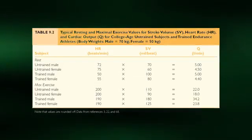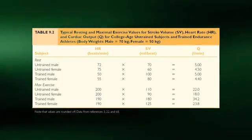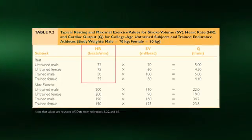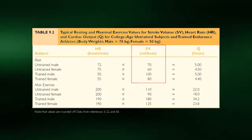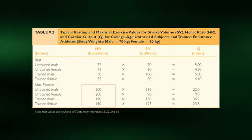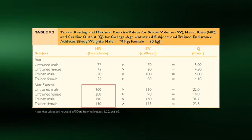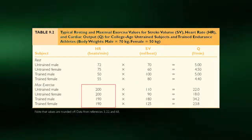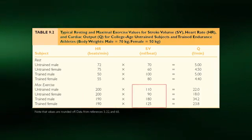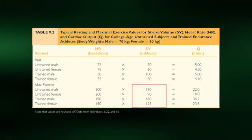Shown here are the typical training adaptations related to the cardiovascular system. Notice that resting heart rate is significantly lower in trained men and women. This athletic bradycardia can occur because of the increase in resting stroke volume, thereby maintaining resting cardiac output. Now notice that at maximal exercise, training has no effect on maximal heart rate — if anything, it is a tad lower. Thus, the increase in maximal cardiac output with training is entirely due to the increase in maximal stroke volume. The heart becomes a more forceful pump after training.